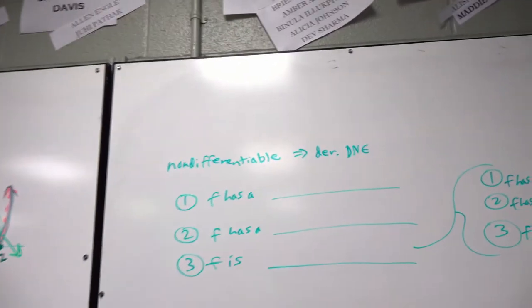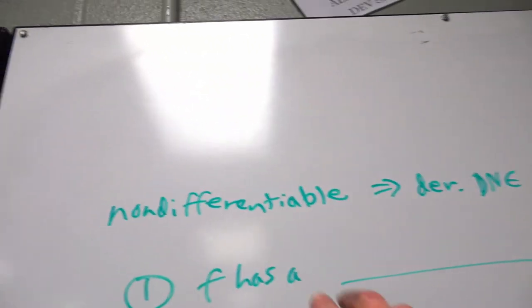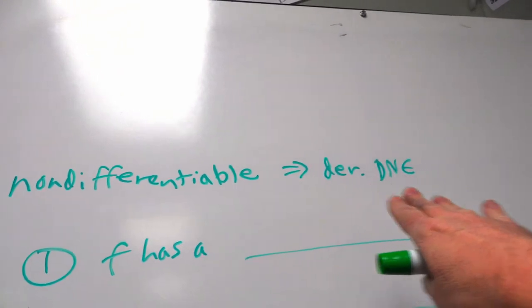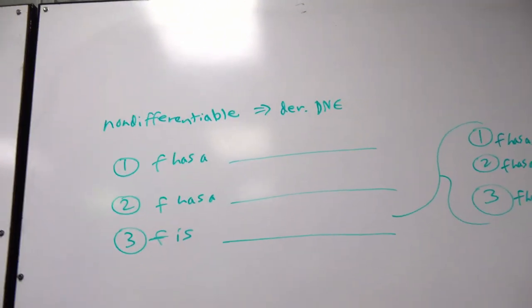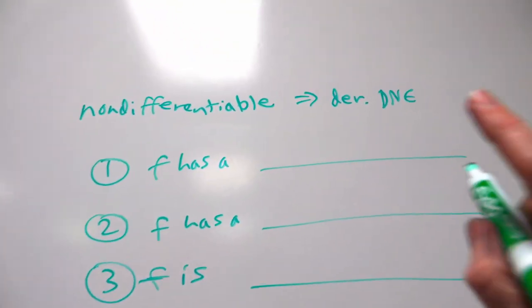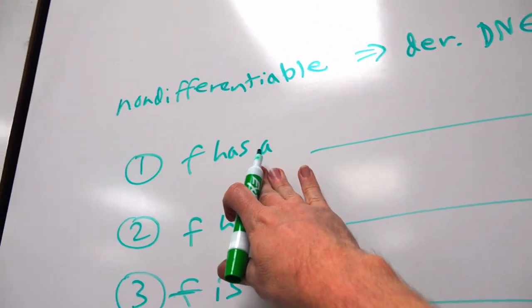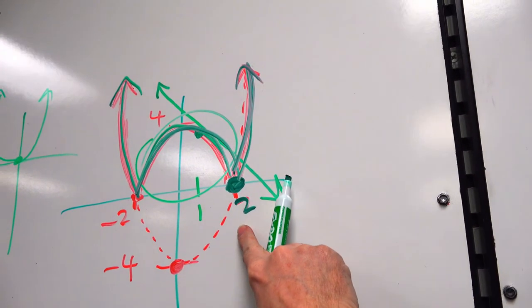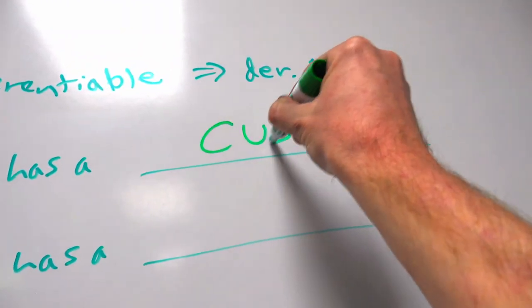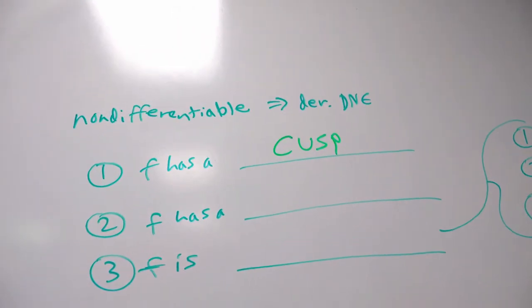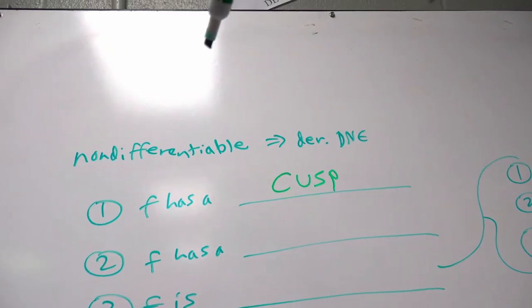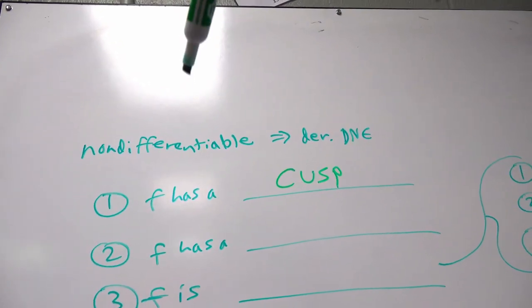A function is considered non-differentiable when the derivative does not exist. There are three places the derivative does not exist that you need to know as a calculus student. First: if F has a sharp corner — what's the calculus word for sharp corner? A cusp. That just means a sharp point. If F has a cusp, the derivative does not exist, and the original function F is non-differentiable.